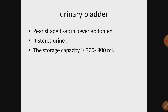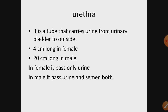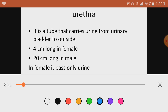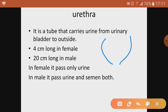The urinary bladder is a pear-shaped sac in the lower abdomen. It stores urine and has a storage capacity of 300 to 800 ml. The urethra is a tube that carries urine from the urinary bladder to the outside. It is the terminal point of the urinary system. In females, the urethra is only 4 centimeters long, whereas in males it is 20 centimeters long.